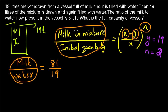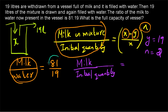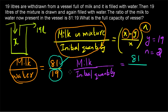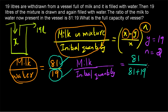We are given the milk to water ratio, and we need the ratio of milk to the initial quantity. The final mixture has 81 parts of milk and 19 parts of water. The initial quantity equals the quantity of milk in the final mixture plus the quantity of water in the final mixture — since whatever the final mixture contains, milk plus water gives back the initial quantity. So we get 81 divided by (81 plus 19), which equals 81 by 100.